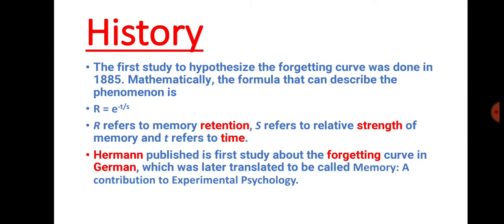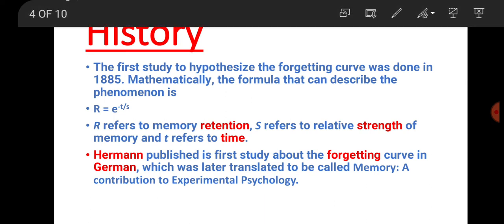If we go into history, the first theory was hypothesized on the forgetting curve in 1885. Mathematically, we have a formula that is R equals e to the power minus T by S, which means R refers to memory retention, S refers to the strength of memory, and T refers to time.